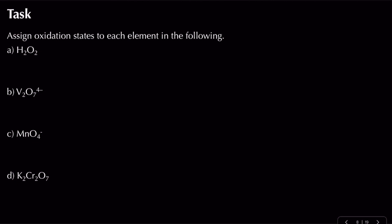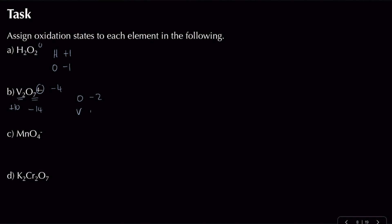For the trickier examples: in hydrogen peroxide, hydrogen is +1 and oxygen is −1, giving a neutral overall state. For the vanadate ion V₂O₇⁴⁻, the overall charge is −4. Oxygen is −2 with seven atoms giving −14, so we need +10 to reach −4. Split across two vanadium atoms, each vanadium has an oxidation state of +5.